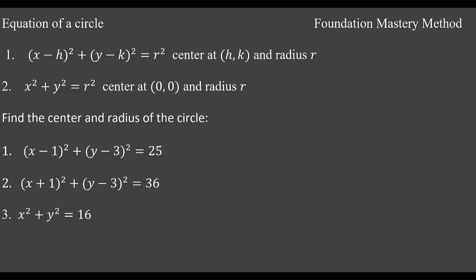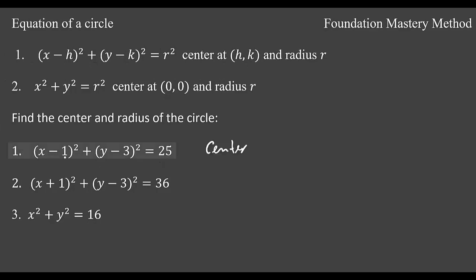Now we have a couple of questions here. First we see (x - 1)² + (y - 3)² = 25. So h is 1 and k is 3.